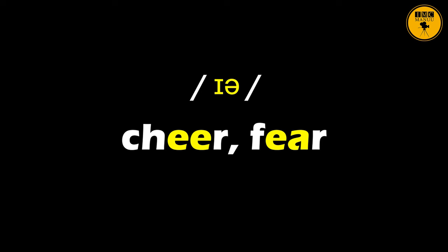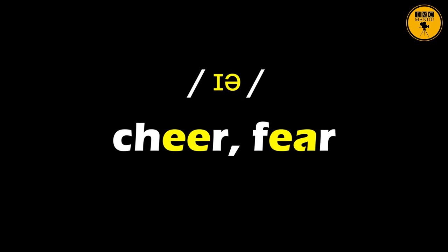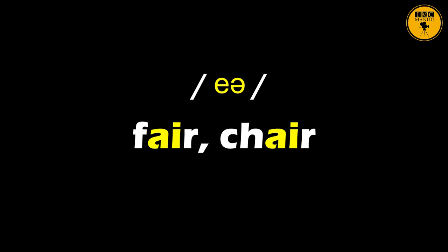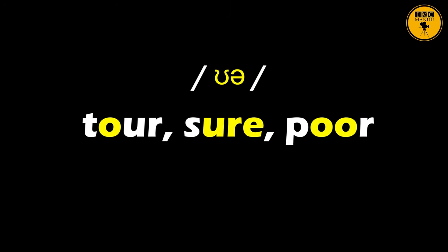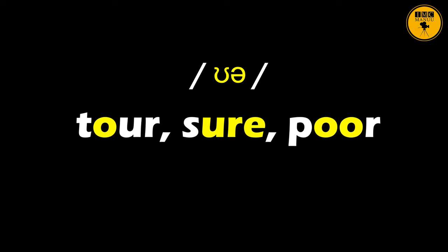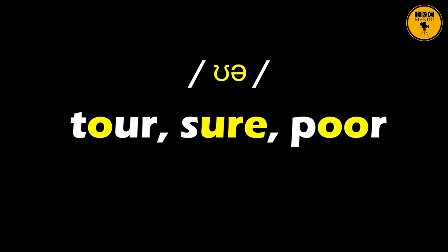Now we look at the last set of diphthongs — these are the centering diphthongs. There are three sets again. Watch the symbol carefully: cheer, fear. Notice the symbol again: fair, chair. An easy way to practice is on your smartphones — just type the word, add 'meaning,' and click on the sound icon so you can hear the pronunciation of these diphthongs.